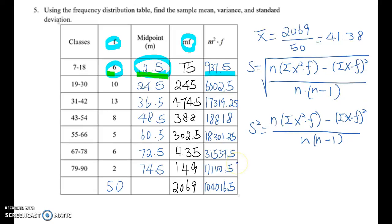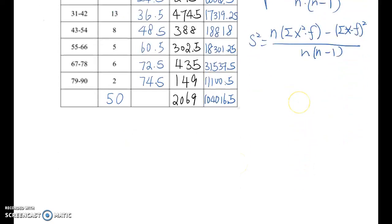Then let's find out variance first. So based on this, s-squared equals 50 times 104016.5 minus 2069 squared over 50 times 49. If we calculate it, you will get 375.5363.